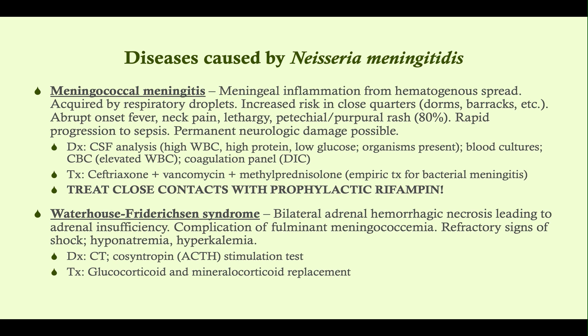The treatment is threefold: ceftriaxone, vancomycin, and methylprednisolone. We use all three because we don't want to wait to identify exactly what organism it is — this is the empiric treatment for bacterial meningitis that covers everything. Ceftriaxone is really targeting the Neisseria. Why do we use methylprednisolone? A steroid helps reduce the inflammation — we have the antibiotics going after the infection and the steroid going after the inflammation. It's the inflammation that can cause permanent neurologic deficits. This treatment approach will come up on step two and three.